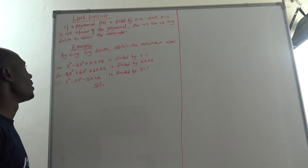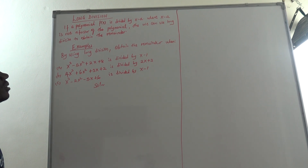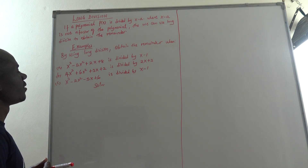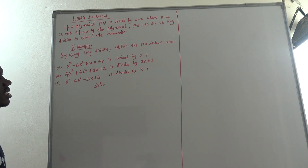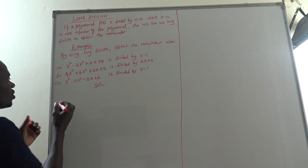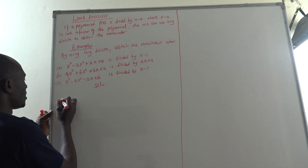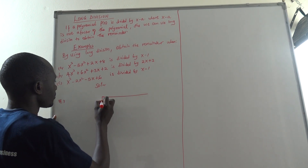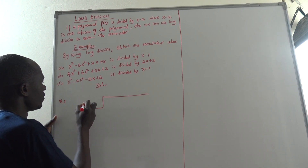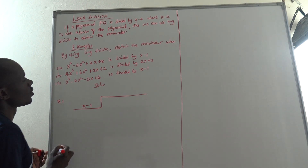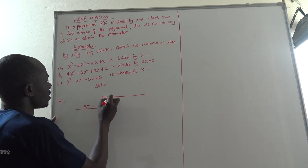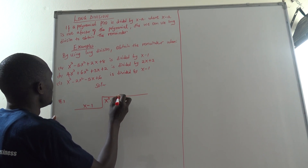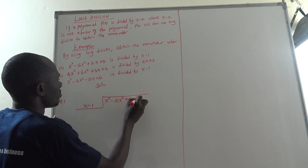So I want you to be very careful with these examples. By using long division, obtain the remainder when x cubed minus 5x squared plus 2x plus 8 is divided by x minus 1. The divisor is x minus 1, so we are going to use our long division. This is the divisor, which is x minus 1, and we are dividing the polynomial x cubed minus 5x squared plus 2x plus 8.